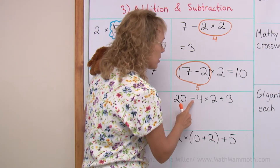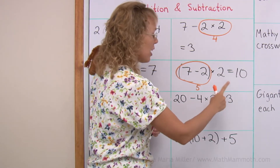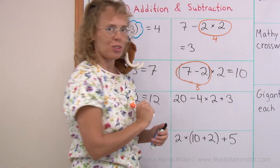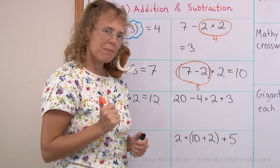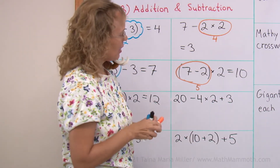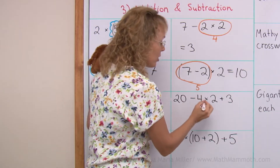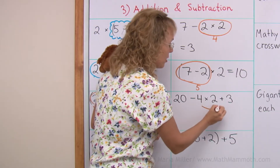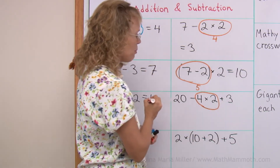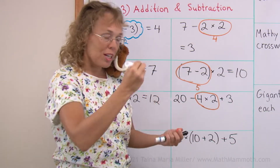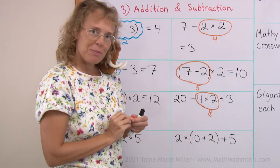There's some subtraction, multiplication, and addition. So now what? Multiplication gets done first — 4 times 2 or 2 times 4.